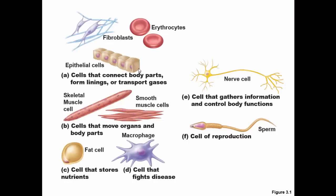Here's another example of the different types of cells. The main groups include epithelial cells, which are connecting tissues and linings — in pathology, epithelial or epithelium usually means lining cells. You also have skeletal or muscle cells that move organs and body parts, fat cells that store nutrients giving them their full shape, cells that fight diseases and change in shape, and cells that gather information, like nerve cells and reproductive cells. This shows the wide variety of cells even within our own body.